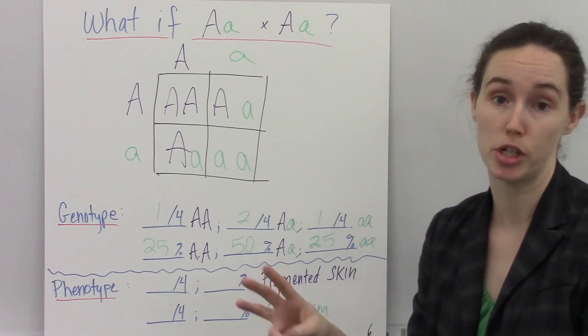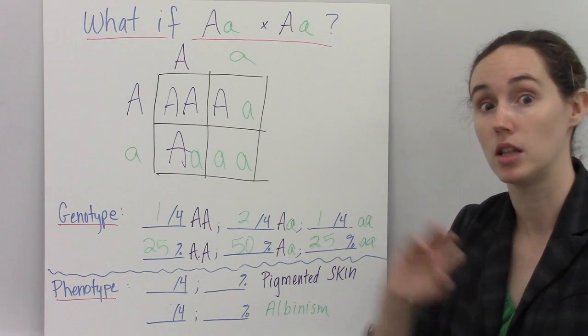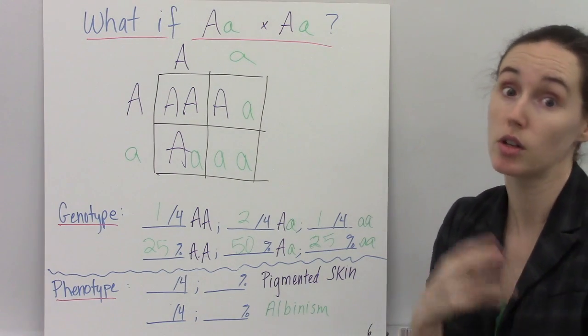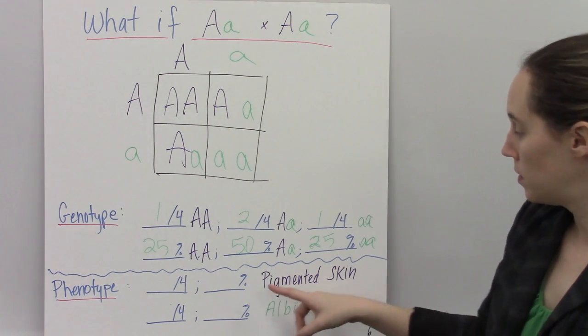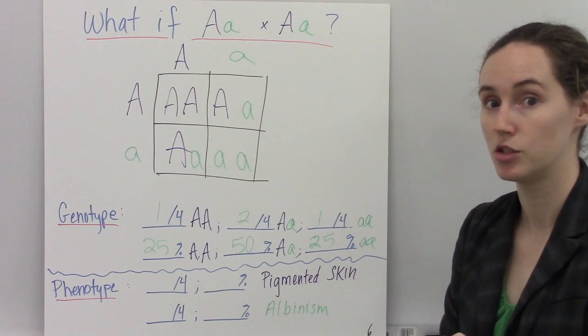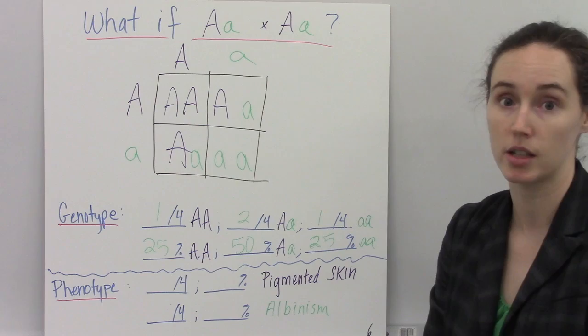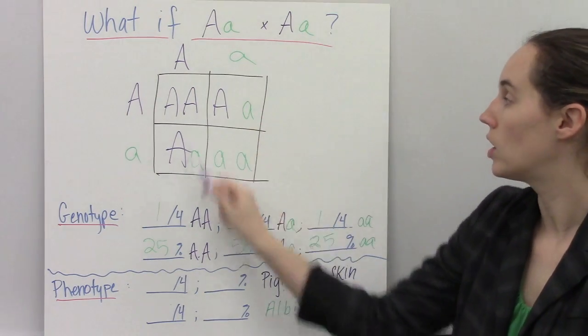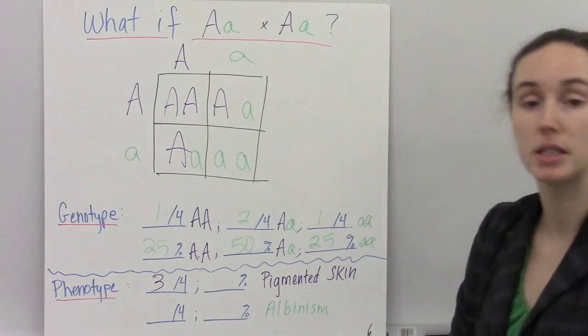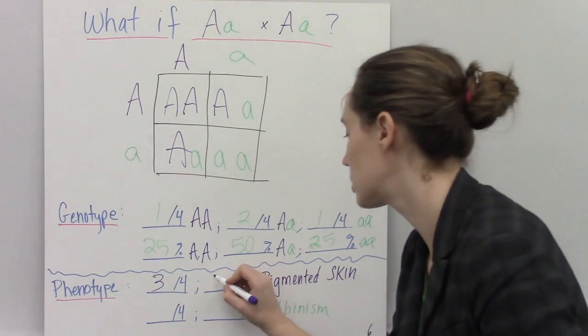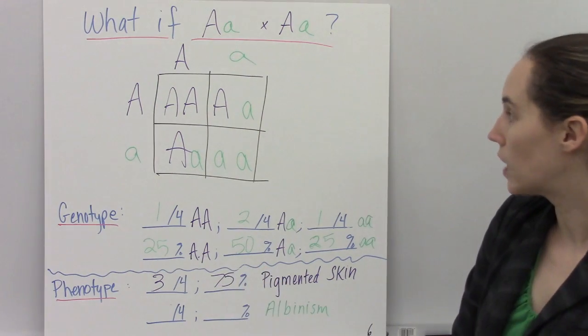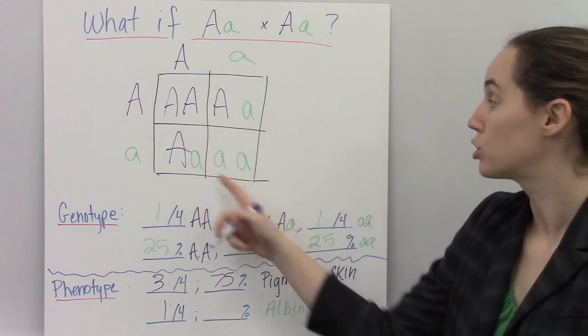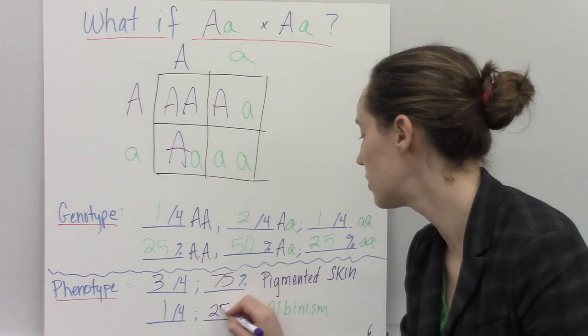Okay, now we have three different genotypes. However, because the allele for pigmented skin is dominant over the one for non-pigmented skin, our phenotypes, the ratios for those, are going to be different than the genotypes. So let's take a look. Both those with homozygous dominant genotype and heterozygous phenotype are going to have pigmented skin. Okay, so one, two, three out of four of our offspring will have pigmented skin, or likely to have pigmented skin. And that equals 75%. Okay, on the other hand, only one out of four are homozygous recessive and will show the albinism phenotype. So that's 25%.